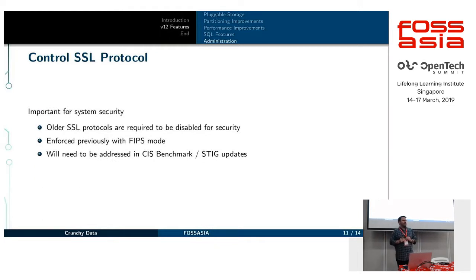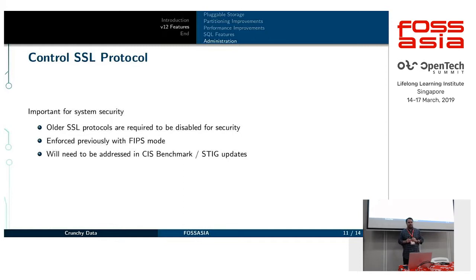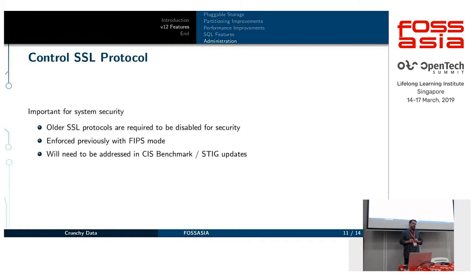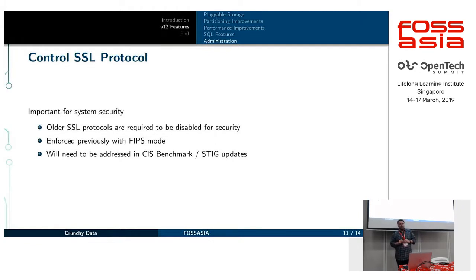Of interest to people who really care about security: you're now able to control which SSL protocols Postgres will run with as a server. Previously we didn't have a way of doing this, and in many environments you're required to disable older SSL protocols because they're unsafe. You could previously enforce it with FIPS mode OpenSSL, but that required working at the system-wide OpenSSL level. Now we can do it directly in Postgres. We'll be updating the CIS benchmark and the STIG to accommodate this change.